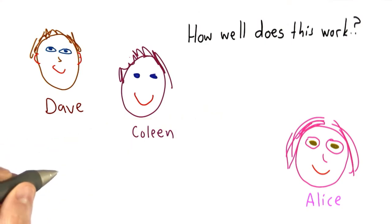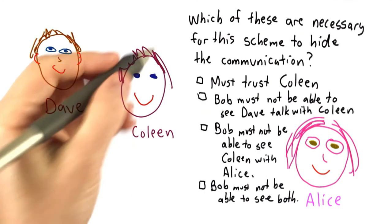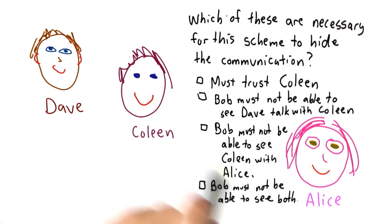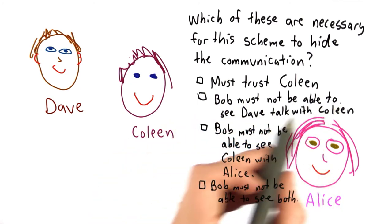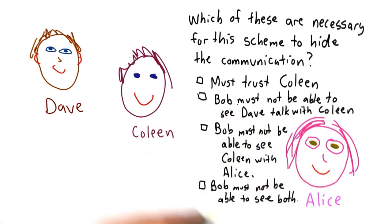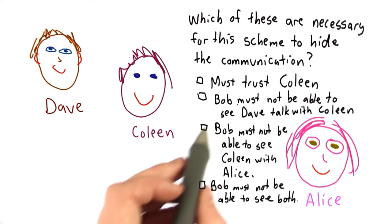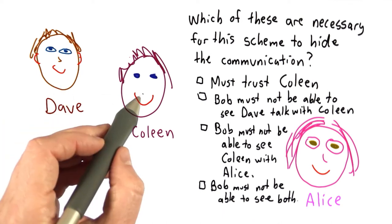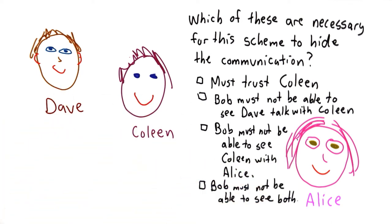So how well does this scheme work? The question is, which of these properties are necessary for the scheme I just described to successfully hide the fact that I'm communicating with Alice? It requires complete trust in Colleen. It requires that Bob cannot see when I talk with Colleen. It requires that Bob must not be able to see when Colleen talks with Alice. It requires that Bob must not be able to see both communications — when I talk with Colleen and when Colleen talks with Alice.